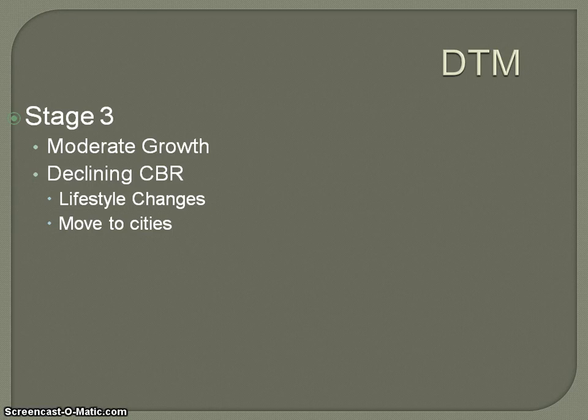You start to see social changes. Things like birth control become more acceptable because of the increased economic situation. There's this desire to have smaller families. Typically, the first generation has a real emphasis on education. Parents want to send their kids to school, so they have fewer children to give them better opportunities. This conscious decision starts to get made to have fewer children because of the conditions people are living in.